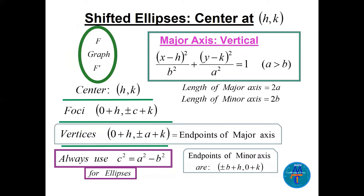The same rules apply if we have a vertical major axis. The equation becomes (x−h)²/b² + (y−k)²/a² = 1, where a² is still the bigger number in both cases. The length of the major axis is 2a, the minor axis is 2b, and the center is (h, k). The center is the midpoint of both the foci and the vertices. The foci and vertices always lie on the major axis. The formula c² = a² − b² is the same.